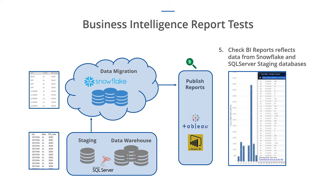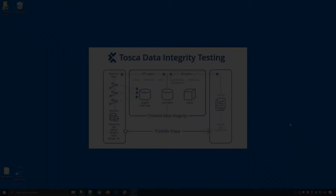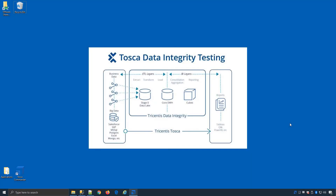For this lesson we will specifically show how we can compare the report data between the SQL Server staging database to Snowflake database, and then Snowflake database to the Tableau report as well as Power BI. To do our business intelligence report testing we use a combination of Tosca's model-based automation for UI and API as well as Tosca data integrity.